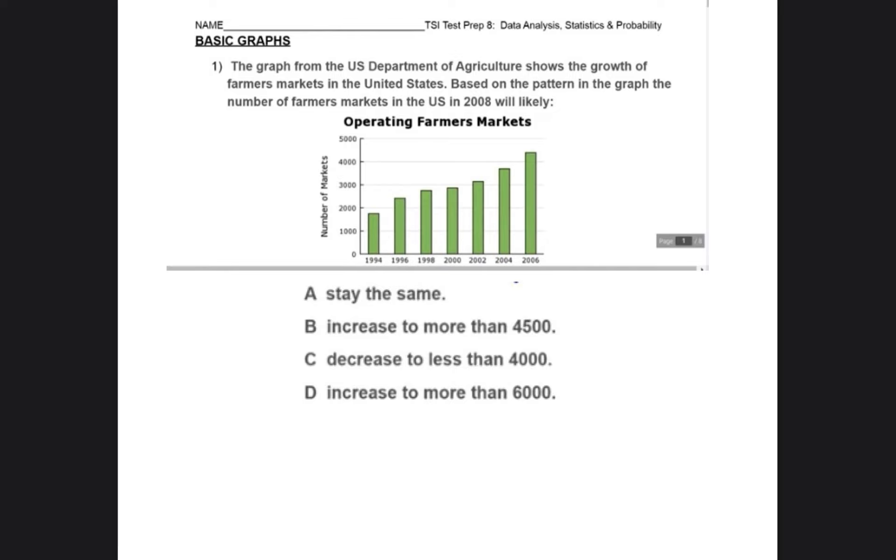and then our choices are stay the same, increase to more than 4,500, decrease to less than 4,000, or increase to more than 6,000.